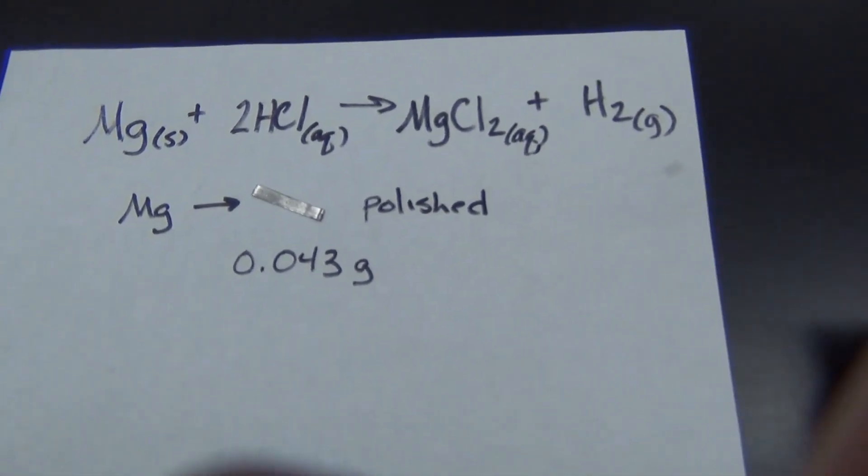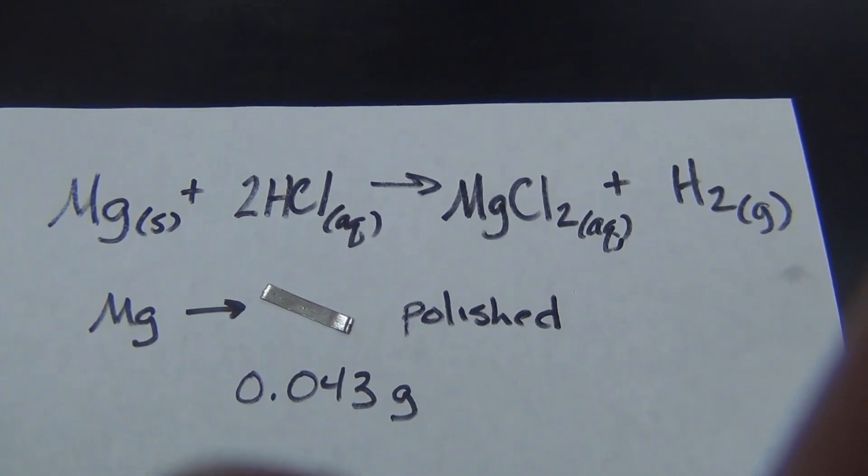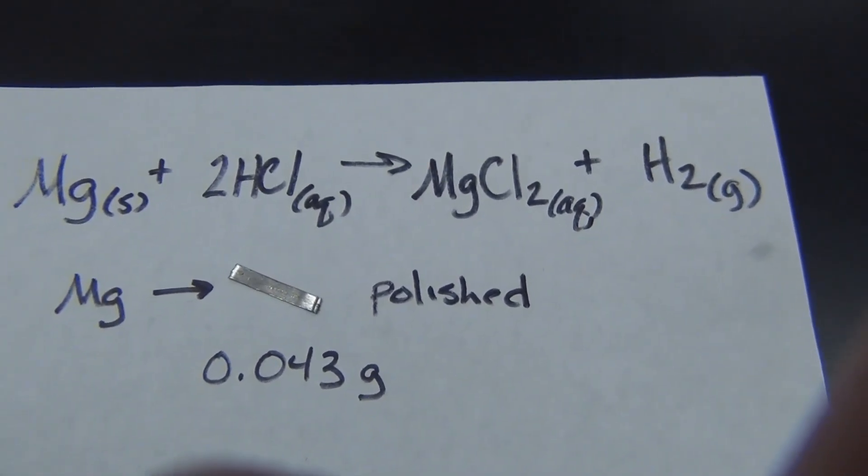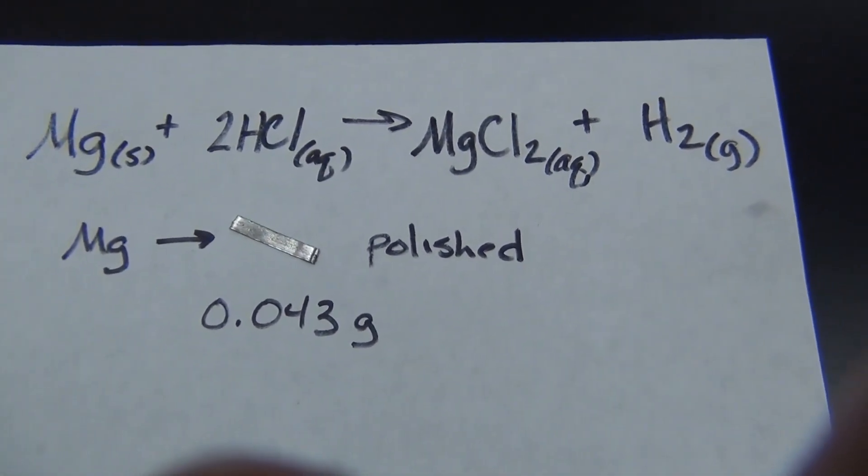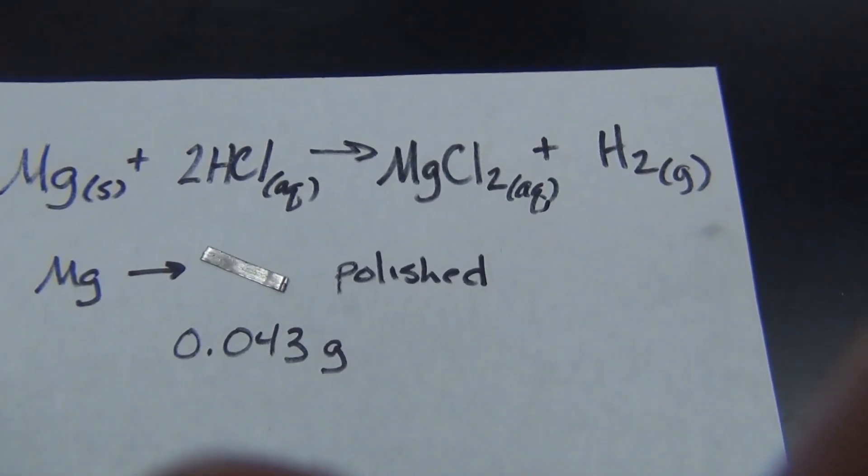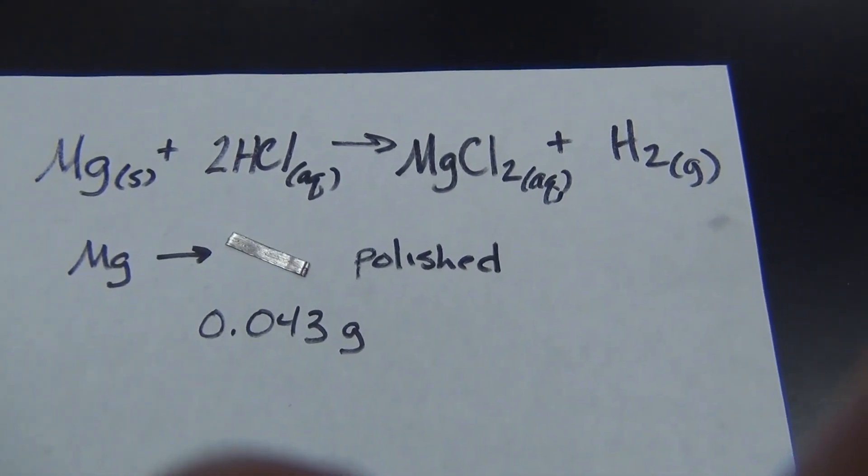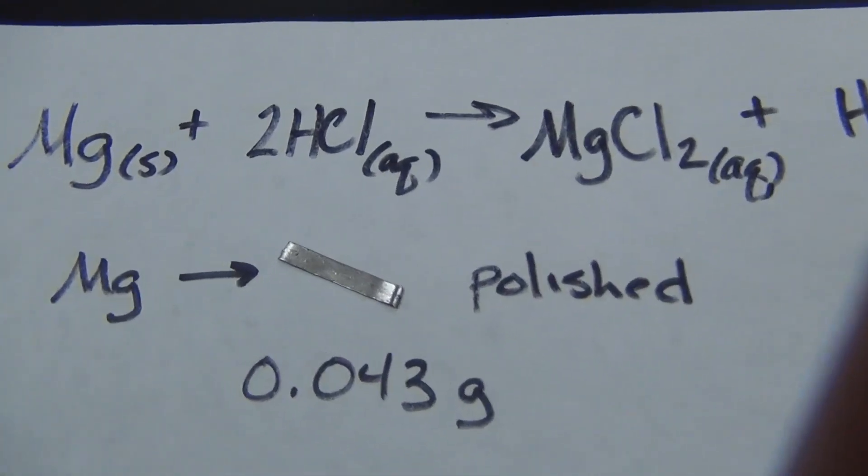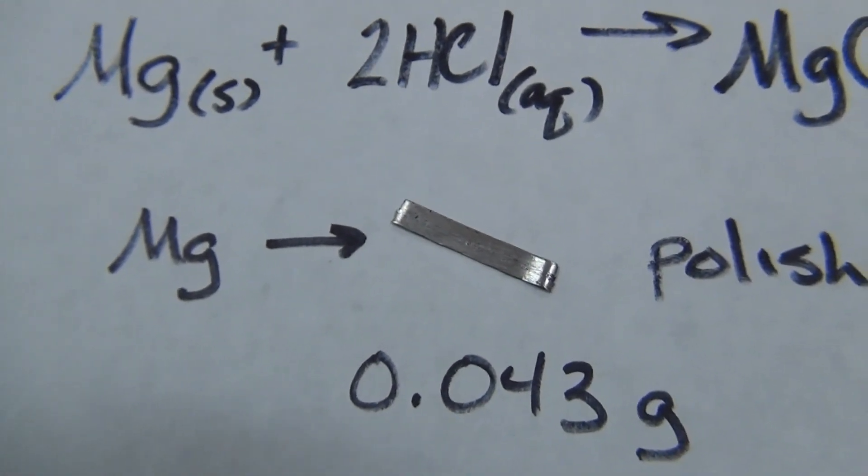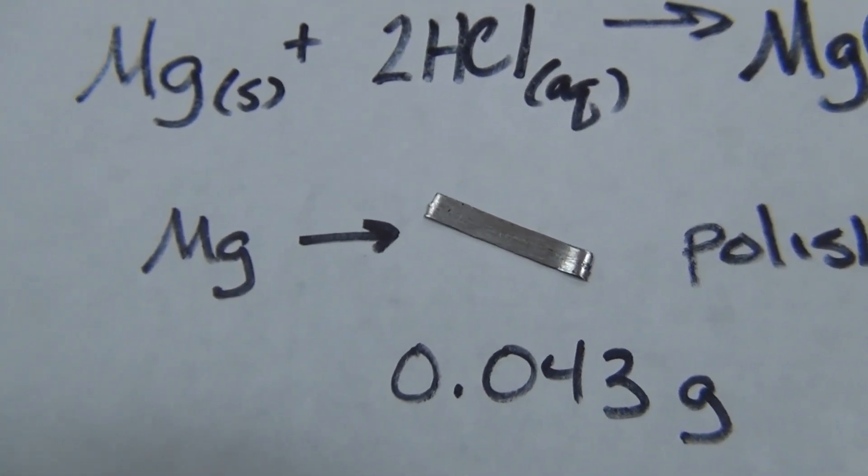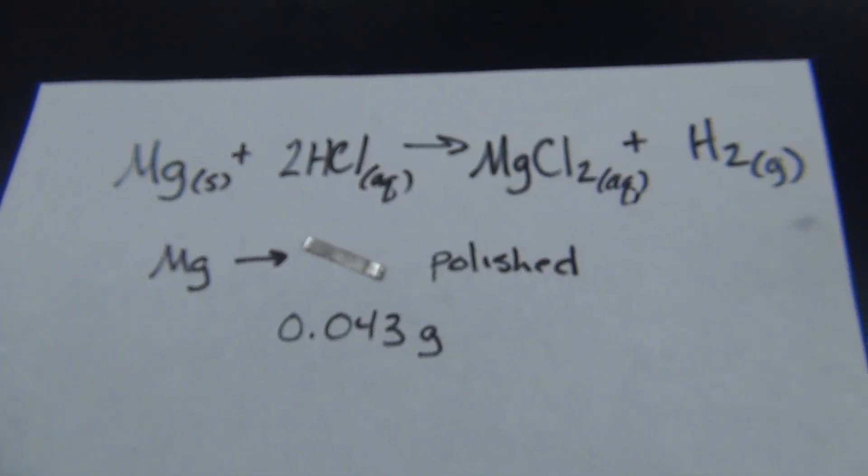So we are going to use this reaction of magnesium metal and hydrochloric acid to generate some hydrogen gas. And we're going to compare the amount of hydrogen gas we generate with what we theoretically should have made. That means we're going to need to know exactly how much magnesium we started with. I have taken this piece of magnesium, I polished it with some steel wool to get any fingerprints or tarnish magnesium oxide off of it as much as I could. Then I went ahead and put that carefully on our milligram balance. The milligram mass of this is 0.043 grams or 43 milligrams.